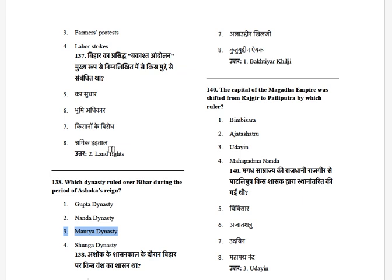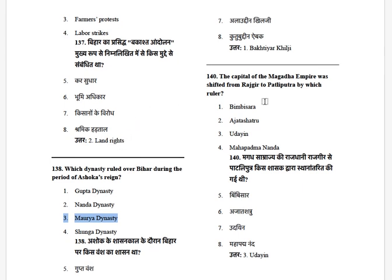The capital of the Magadha empire was shifted from Rajgir to Pataliputra by which ruler? The answer is Udayin (Udayabhadra).